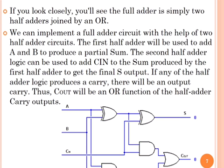If you look closely, you'll see the full adder is simply two half adders joined by an OR. We can implement a full adder circuit with the help of two half adder circuits. The first half adder will be used to add A and B to produce a partial sum.